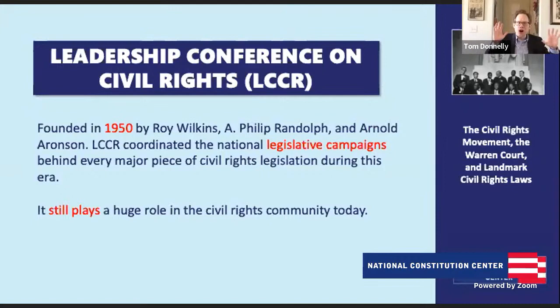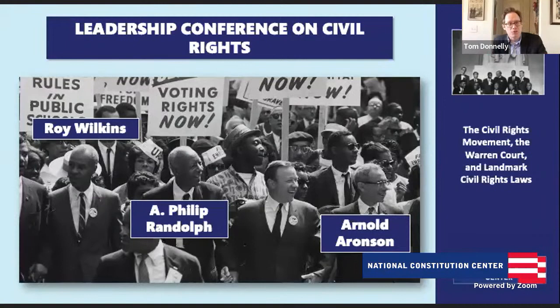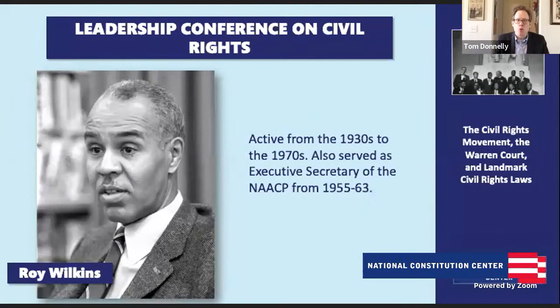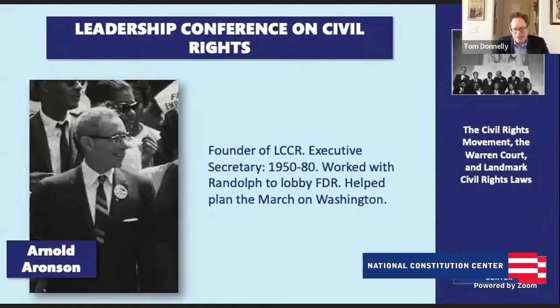The next group is the Leadership Conference on Civil Rights, also known as LCCR, founded in 1950. They played a big role at the national level — you think of big laws like the Civil Rights Act of 1964 and the Voting Rights Act of 1965. LCCR was the main organizer of those activities in Washington, D.C., and still plays a similar huge role today. Key figures include Roy Wilkins, active from the 1930s to the 1970s; A. Philip Randolph, an important labor organizer; and Arnold Aronson, executive secretary from 1950 to 1980, who worked with Randolph to lobby FDR for protections for African-Americans as part of the New Deal and helped plan the March on Washington.